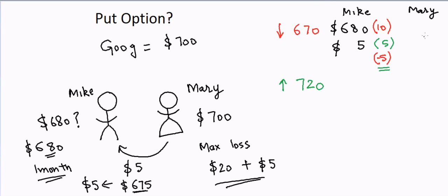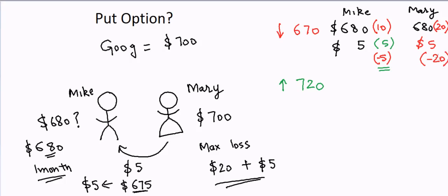For Mary in the downside scenario, she sells her stock to Mike for $680. Since the stock was at $700, she lost $20 there. She also paid five dollars to Mike as the premium, so that adds up. Her total loss is $25.